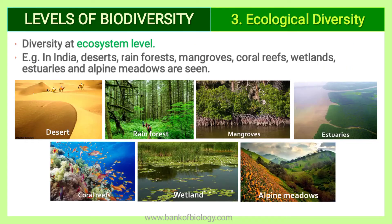Diversity at the ecosystem level is also called ecological diversity. For example, in India, deserts, rainforests, mangroves, coral reefs, wetlands, estuaries and alpine meadows are seen. These represent ecological diversity, meaning different types of habitats are present throughout the country.